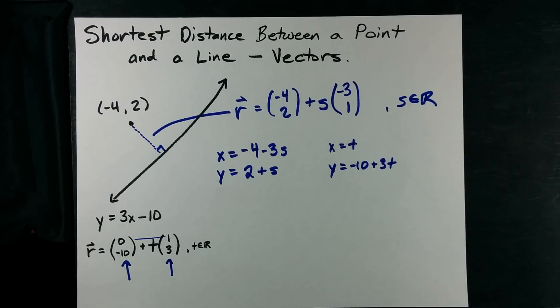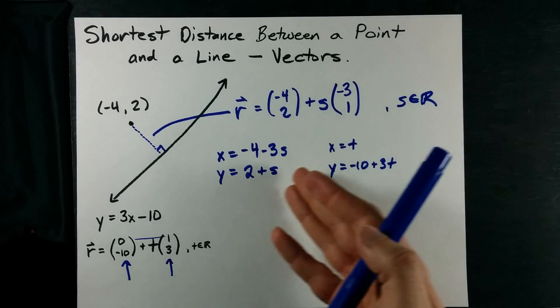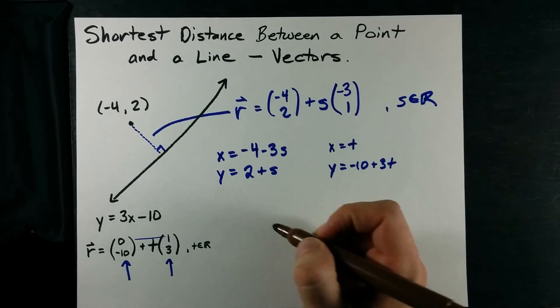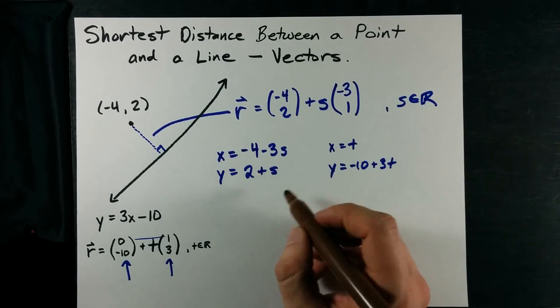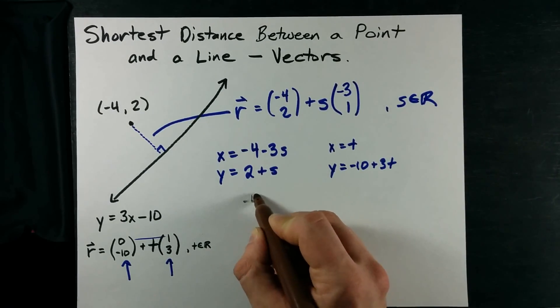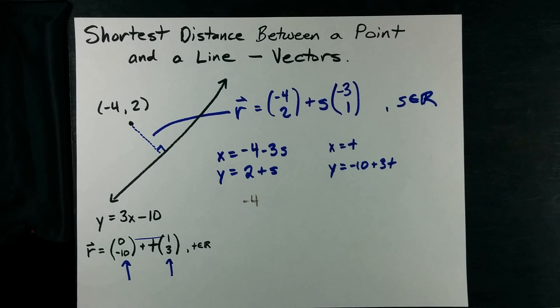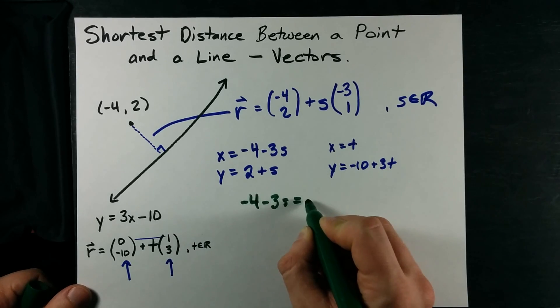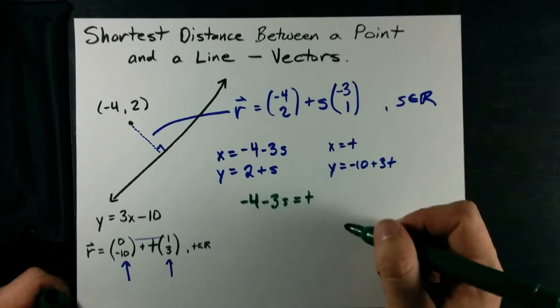So how do I solve parametric equations? Let me see if I remember this. I'm going to set my x's equal to each other. Negative 4 minus 3s equals t. Oh, that was easy.